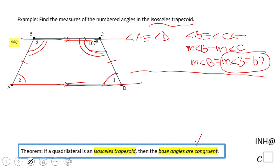angle D—equals 180 degrees. That's the property. So in other words, 107 plus the measure of angle D equals 180. Therefore, the measure of angle 1 is going to be 180 minus 107, which equals 73 degrees.